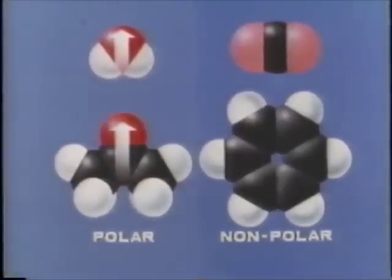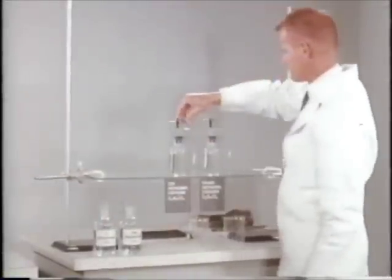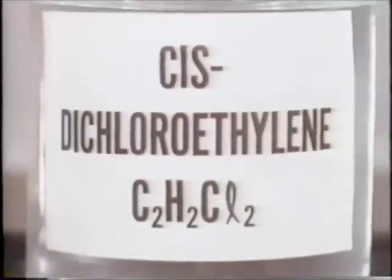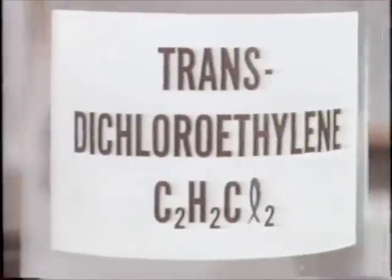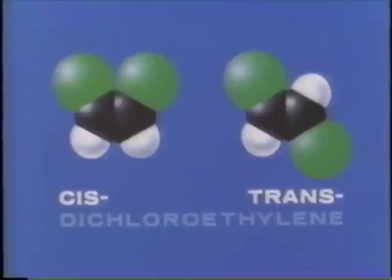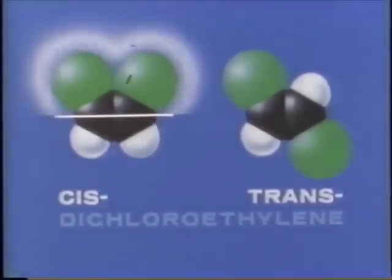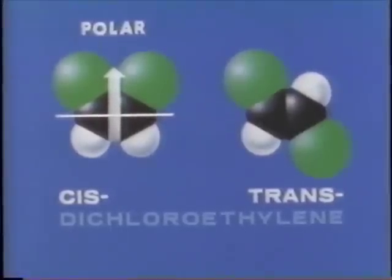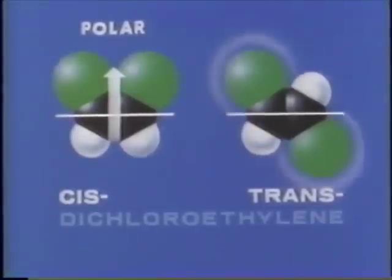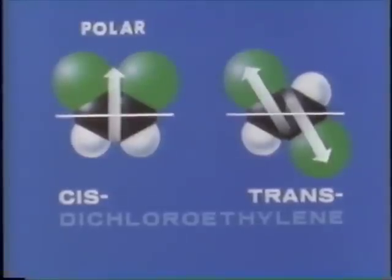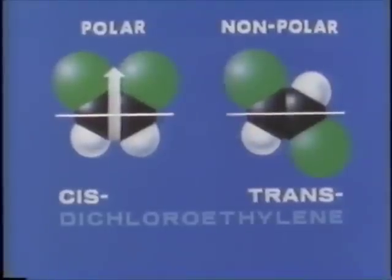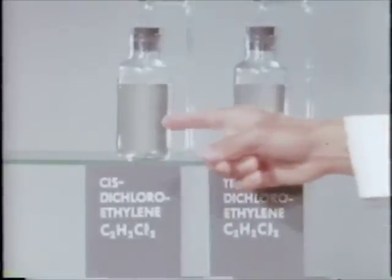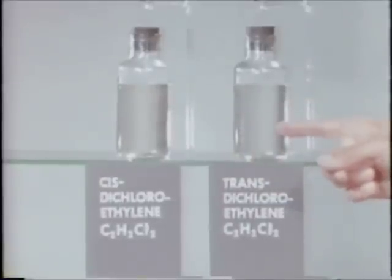To test our model of molecular dipoles, let's see if we can predict the effect of shape on the polarity of molecules. Here are two forms of dichloroethylene: one is called cis-dichloroethylene, the other is called trans-dichloroethylene. They have the same formula but their structures are different. In the cis form, the two chlorine atoms are on the same side of the double bond joining the carbon atoms. Chlorine atoms attract electrons more strongly than do hydrogen atoms, so the cis molecules should be polar. In trans-dichloroethylene, the chlorine atoms are on opposite sides of the double bond, so the opposing dipoles cancel one another — the trans molecules should be non-polar. The trans and cis isomers cannot interconvert because the double bond prevents internal rotation. The polar cis molecules should be deflected by a charged rod; the non-polar trans should not be deflected.